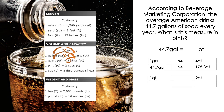Now for step two: going from quarts to pints. One quart is equal to two pints, so I multiply by two. One hundred seventy-eight and eight tenths of a quart times two is equal to 357 and six tenths of a pint.